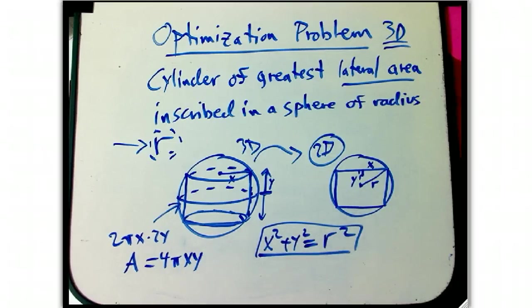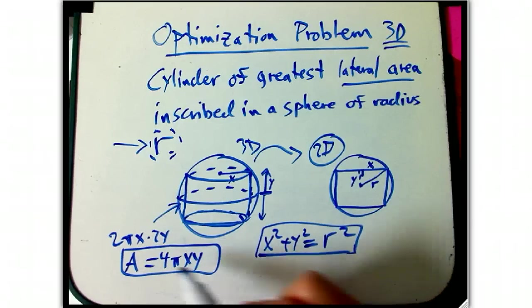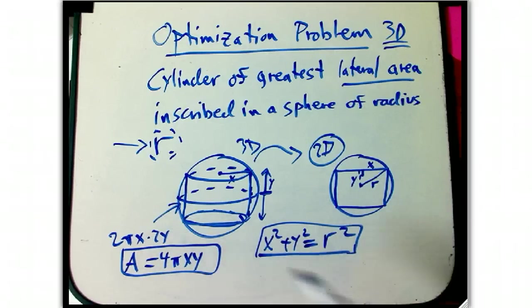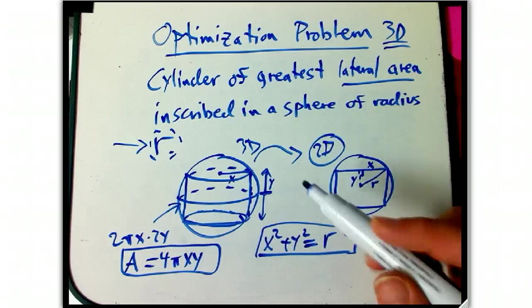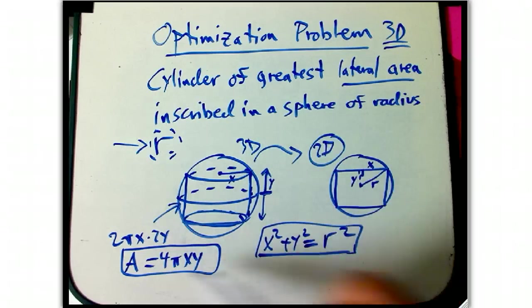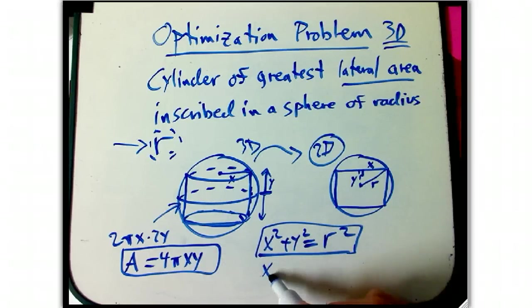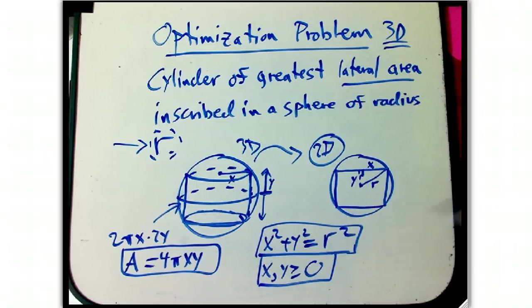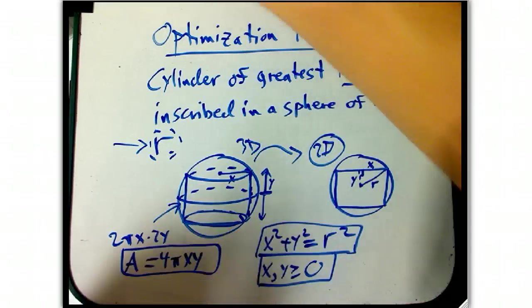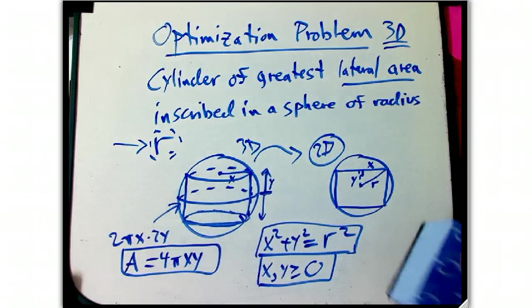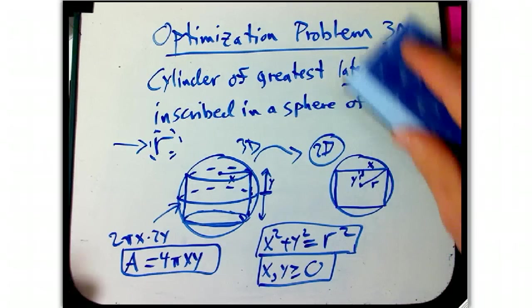Okay, almost got it down to where we want. We've got a constraint, we've got an objective function, and I've been emphasizing the last couple days that you really want, this is the stage where you want to be careful about your bounds as well. And it's very simple, just X and Y have got to be non-negative numbers, they're lengths. And we'll see how that comes into the rest of the problem, so that's a really important thing if you're going to be careful about this stuff.